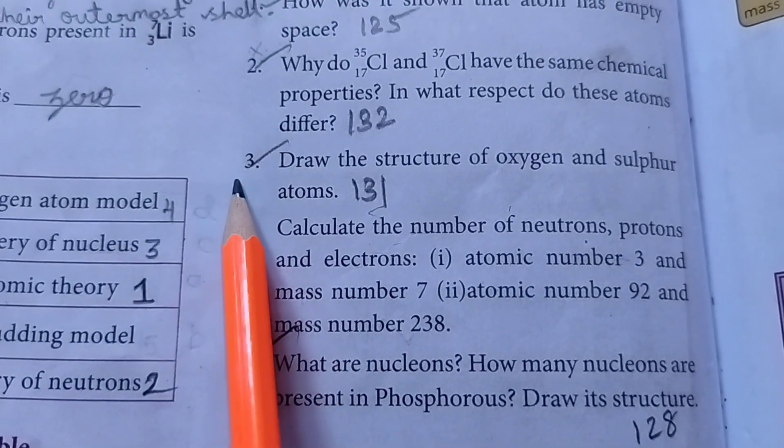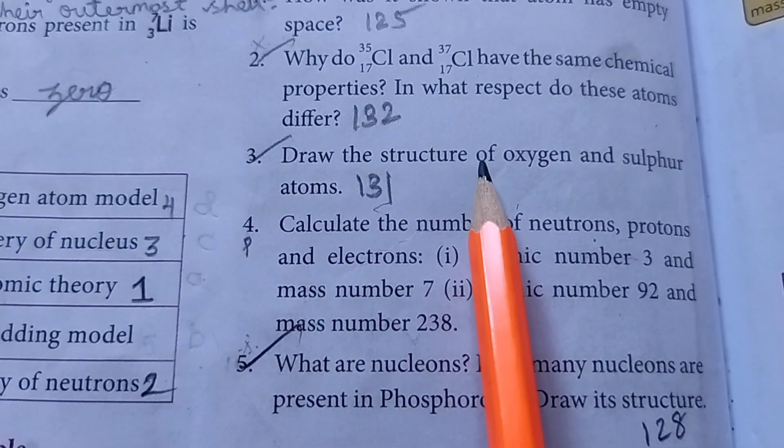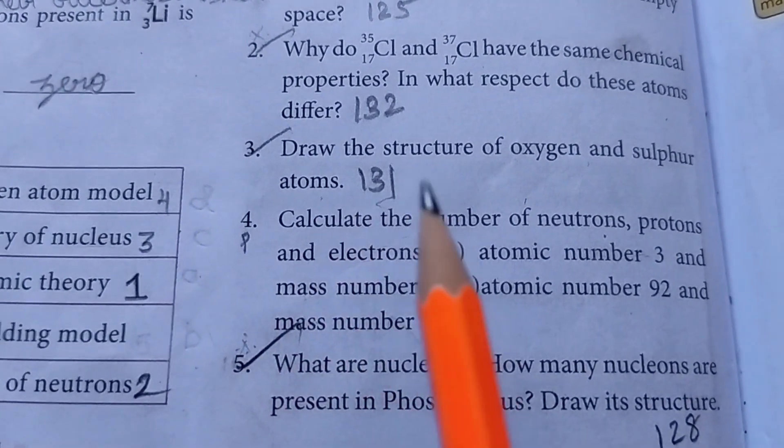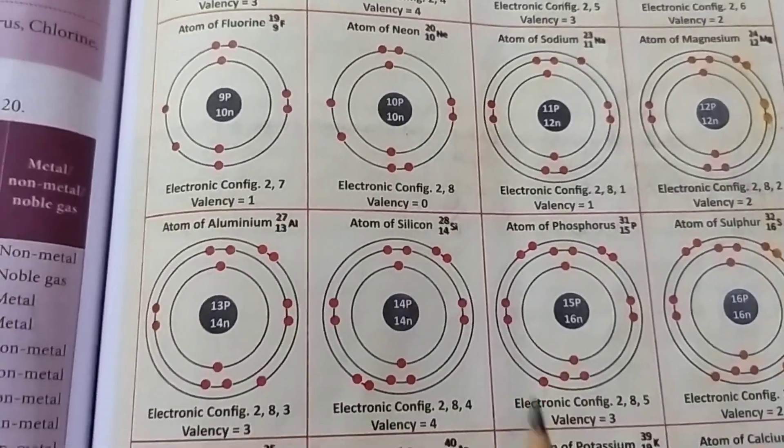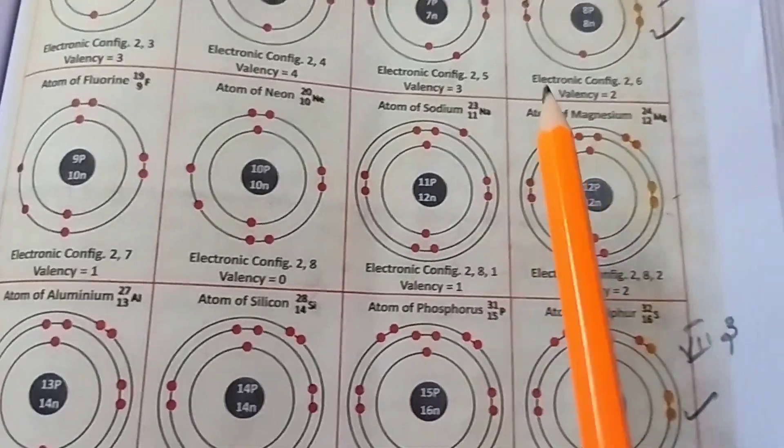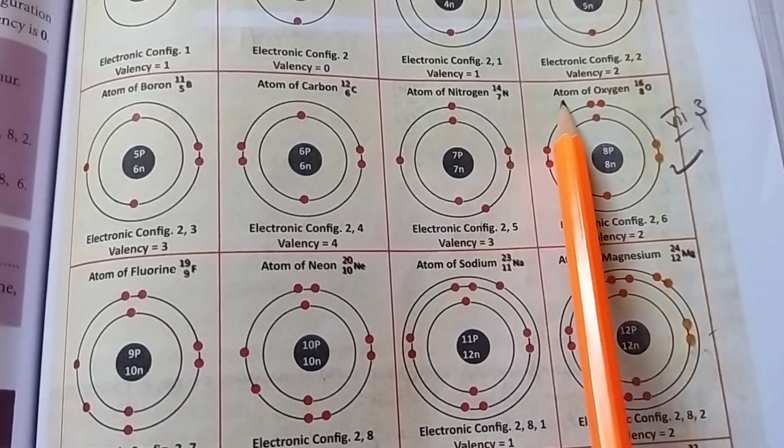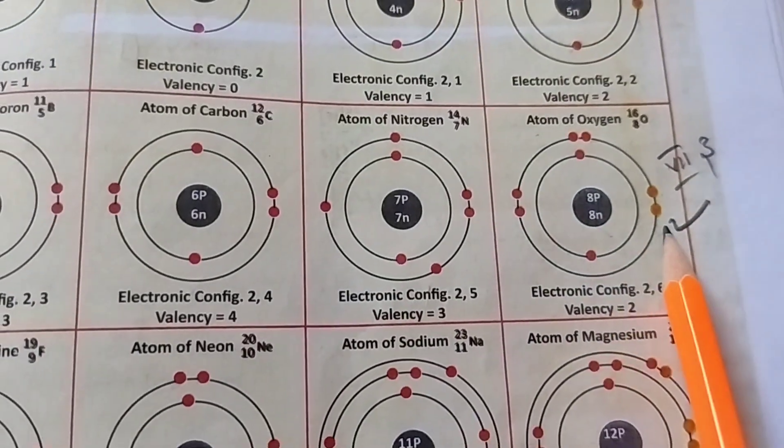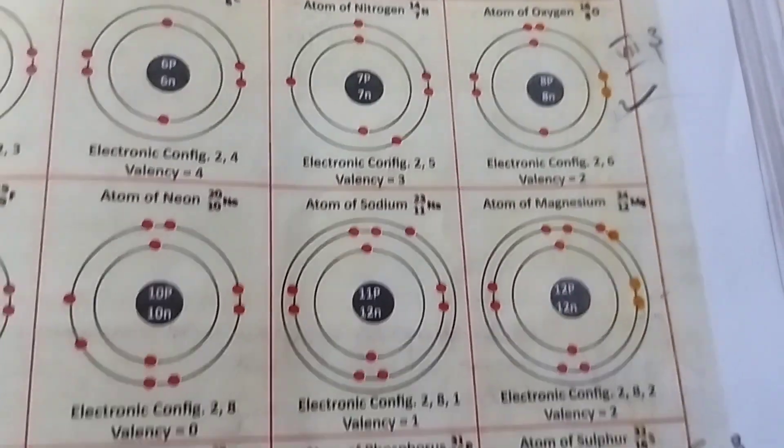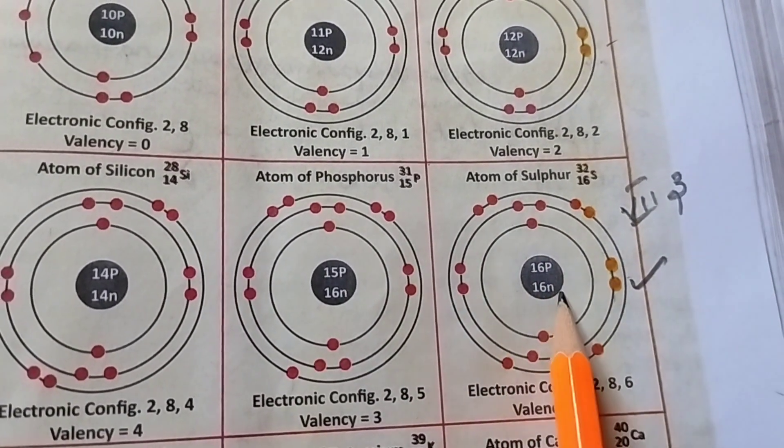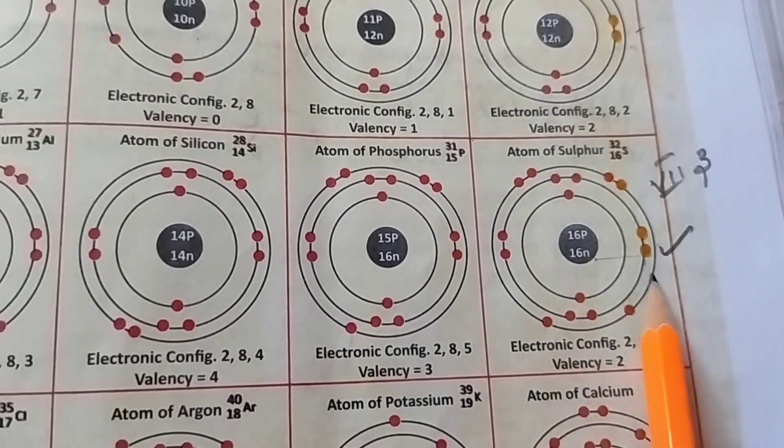Then third question. Draw the structure of oxygen and sulfur atoms. Take page number 131. The second diagram is atom of oxygen. This is the second diagram. Atom of sulfur. This diagram is the third question answer.